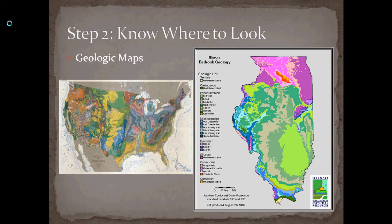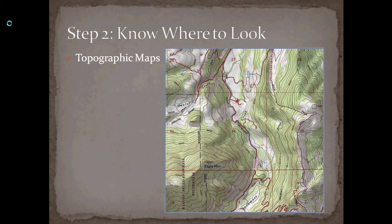Once you understand the geologic map — how to read it and how it tells you where different rocks come to the surface for the time period you're looking at — you need to look at a topographic map to figure out where you want to go look. This is a topographic map of an area in Colorado near Snowmass. Where it says Eagle Mountain, that's the highest elevation, and the little red squiggly line is a creek — that's the lowest point. All the little lines show a change in elevation, so we use that to figure out, for example, whether we're looking for a deposit on the side of a cliff. Topographic maps tell geologists and paleontologists where it's actually feasible to look.